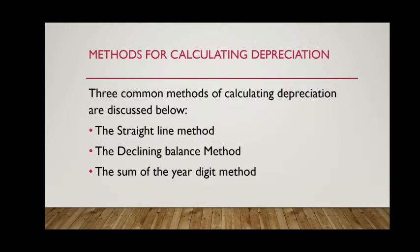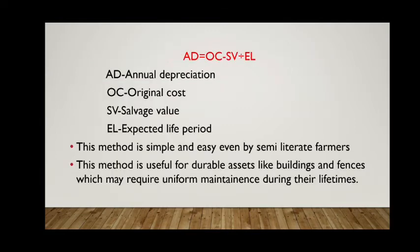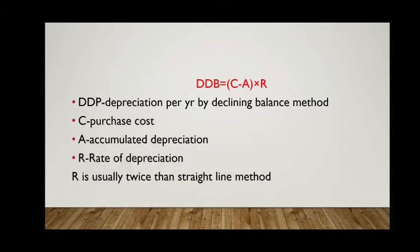The methods used for calculating depreciation are: straight line method, declining balance method, and sum of the year digits method. In the straight line method, the annual depreciation is calculated by subtracting the salvage value from the original cost and dividing it by the expected life period. This is a simple and easy method, useful for durable assets like buildings and fences.